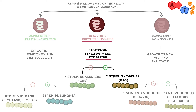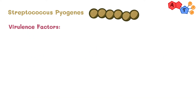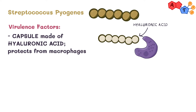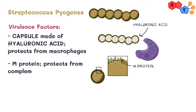In addition to that, Streptococcus pyogenes is also referred to as group A strep. Now for the virulence factors: first, Streptococcus pyogenes has a capsule made of hyaluronic acid, as opposed to the polysaccharide capsule in most encapsulated bacteria, and that protects it from macrophages. The second virulence factor is the M protein, which helps Streptococcus pyogenes evade the immune system, especially phagocytosis and the complement system.